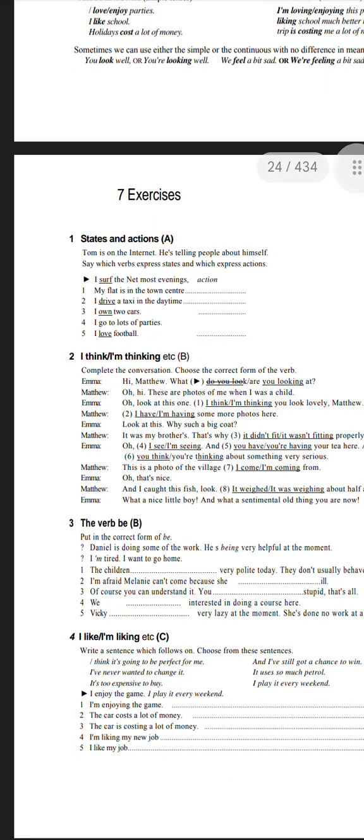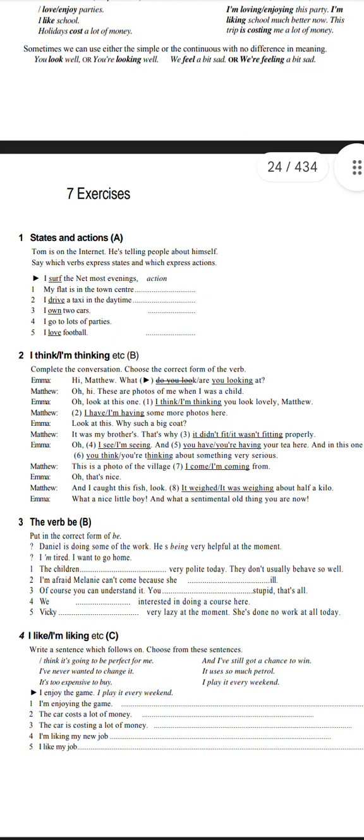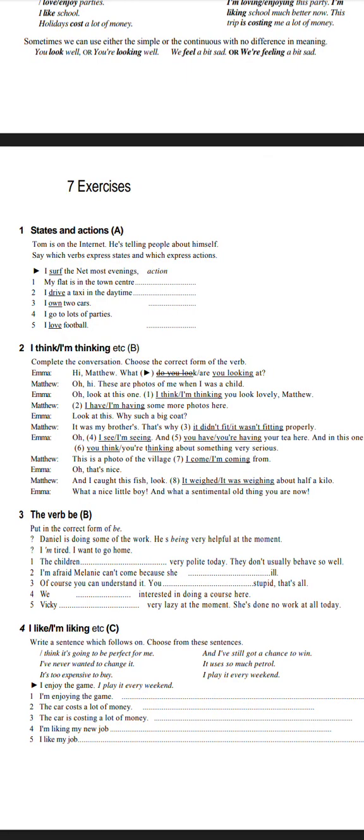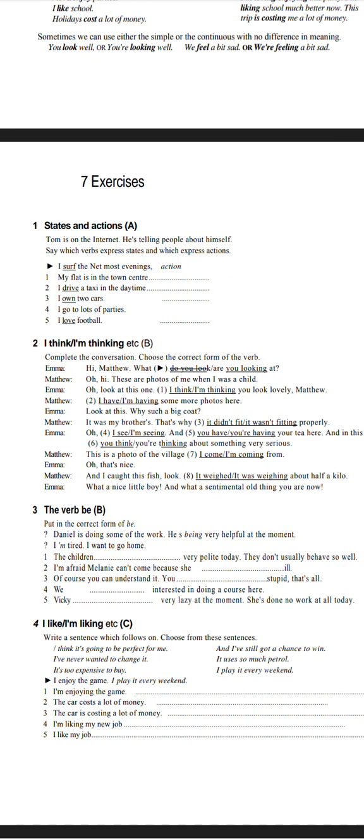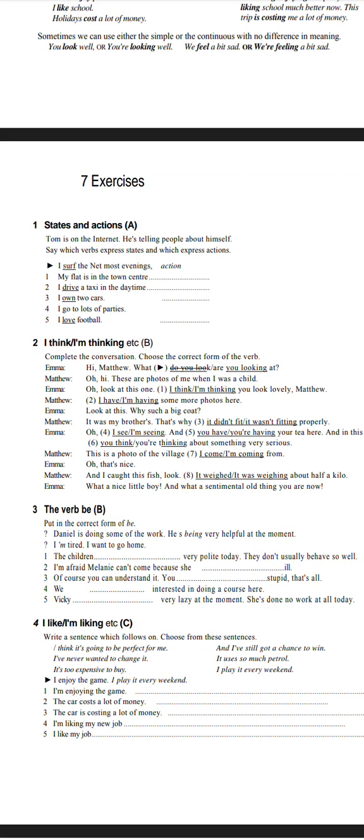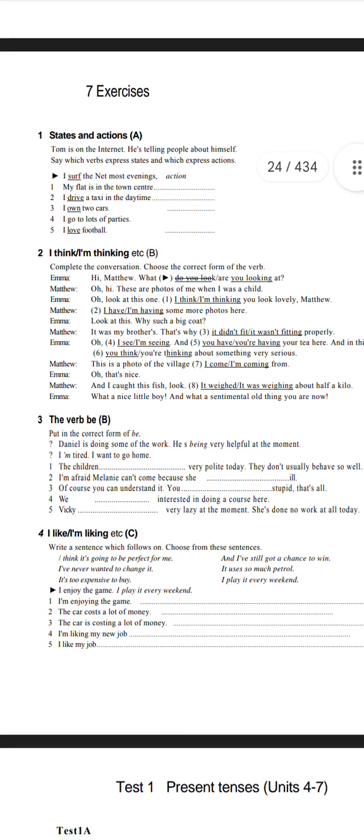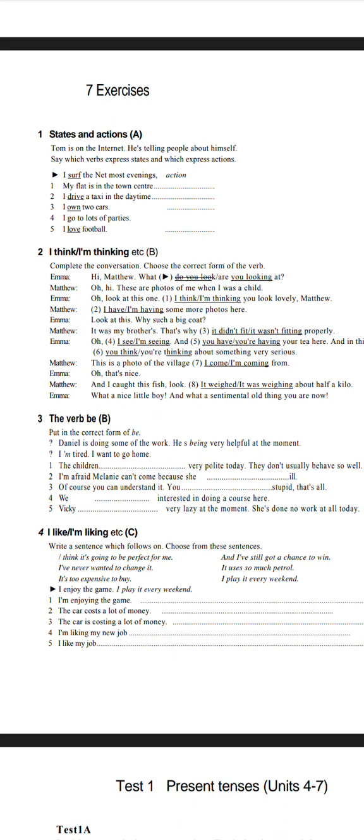Put the correct form of be. I'm tired, I want to go home. First: the children are being very polite today. They don't usually behave so well. Second: Malani can't come because she is ill. Third: you are being stupid. Four: we are interested. Five: Wiki is being very lazy. I am liking, so I am enjoying the game.